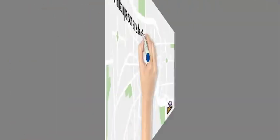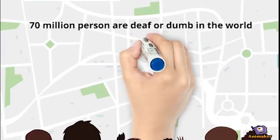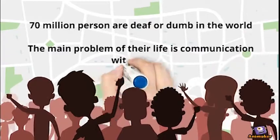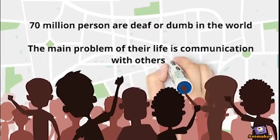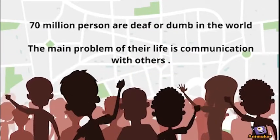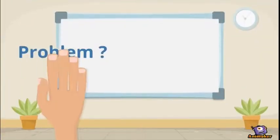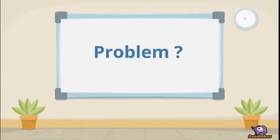To understand and answer all these questions, let's have a look. 70 million persons are deaf or dumb in the world. The main problem of their life is communication with others. They are aphasic by birth or due to some injury.